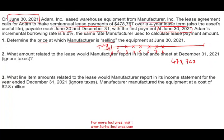Therefore, we take $478,767 times the present value factor of 6.8927, which gives us a selling price of $3,299,997 — almost $3.3 million. So we've answered the first question: the selling price of the equipment is approximately $3.3 million.